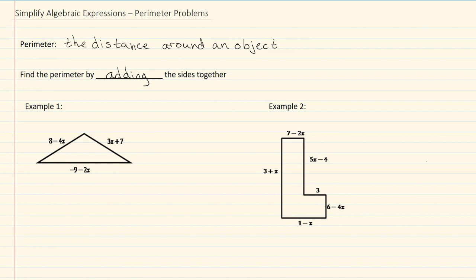In example 1, we have 8 minus 4x, 3x plus 7, and negative 9 minus 2x in this triangle.